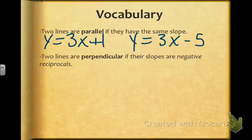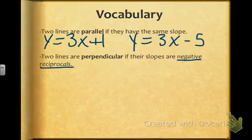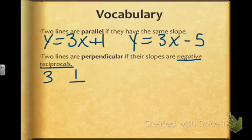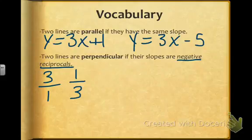What's new in this section is that two lines are perpendicular if their slopes are negative reciprocals of each other. To give you an example, if we look at a slope of 3, the reciprocal of 3 would be 1 third, because technically 3 is the same as 3 over 1. But to be perpendicular, their slopes also have to be negative reciprocals of each other, so negative 1 third would be the slope of a line that's perpendicular to a line with a slope of 3.